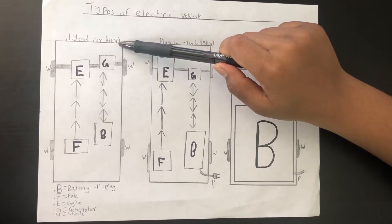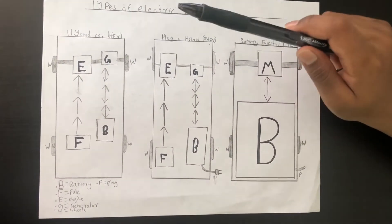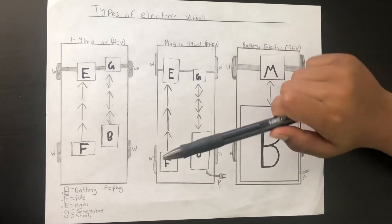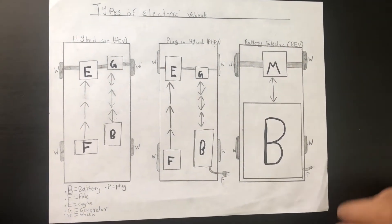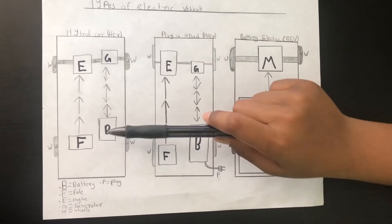So the first one is hybrid electric vehicle, better known as HEV. HEVs first start off with the electric motors. Hybrid electric vehicles are powered by an internal combustion engine and an electric motor, which uses energy from the battery.